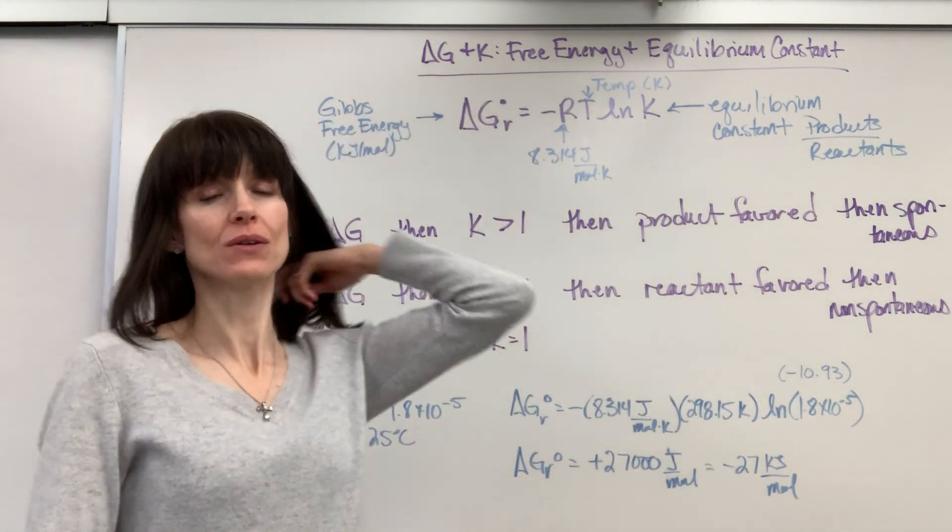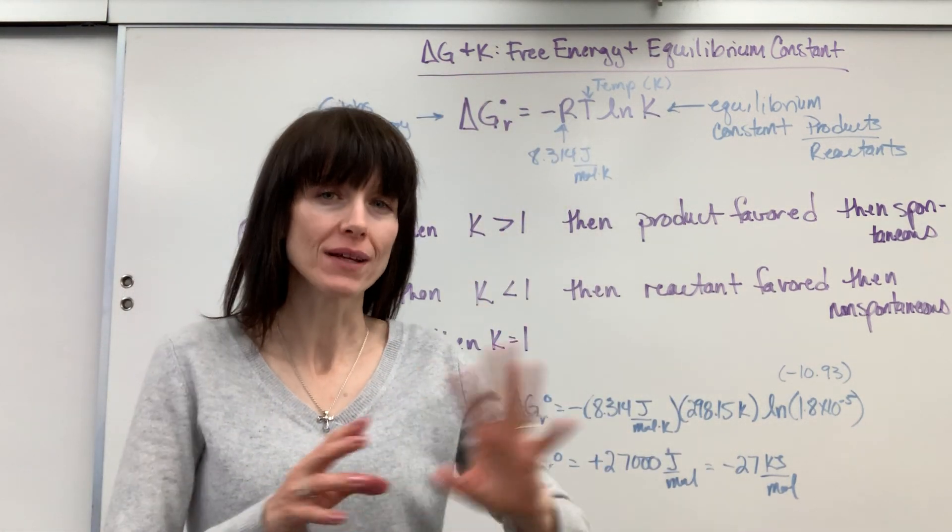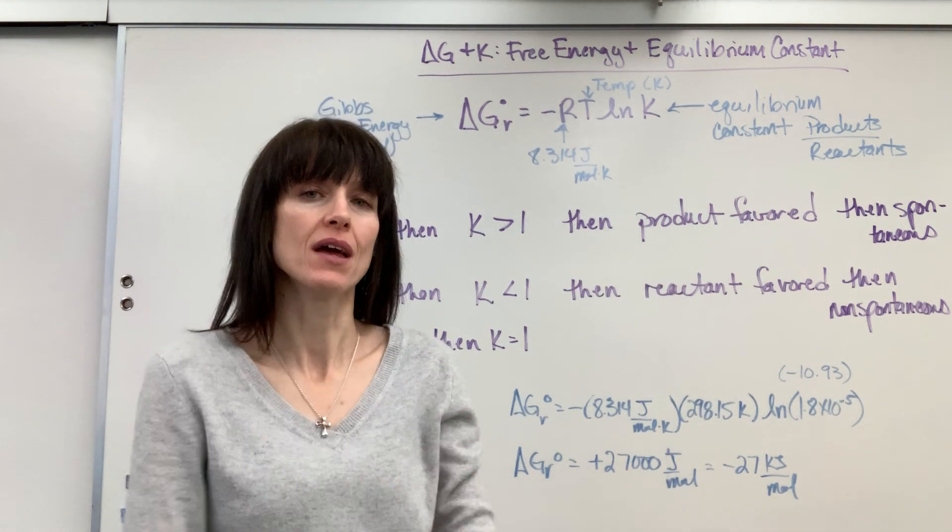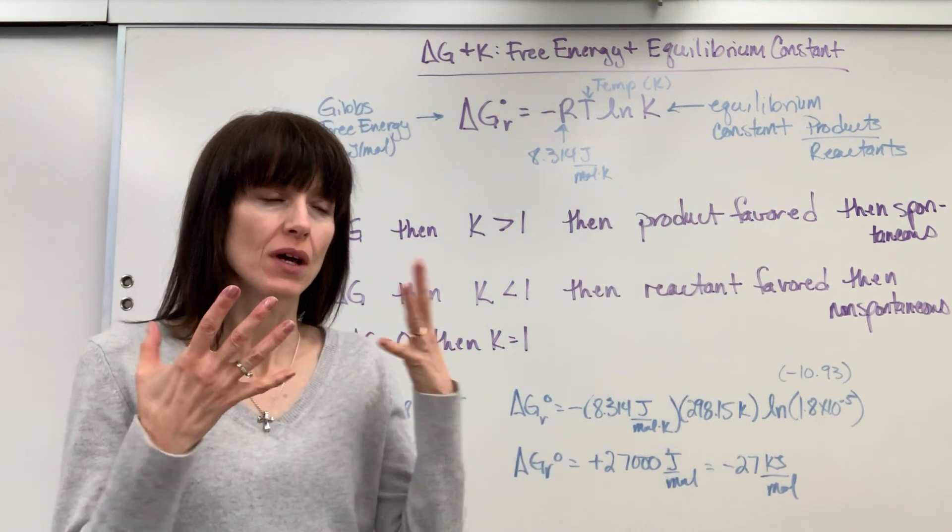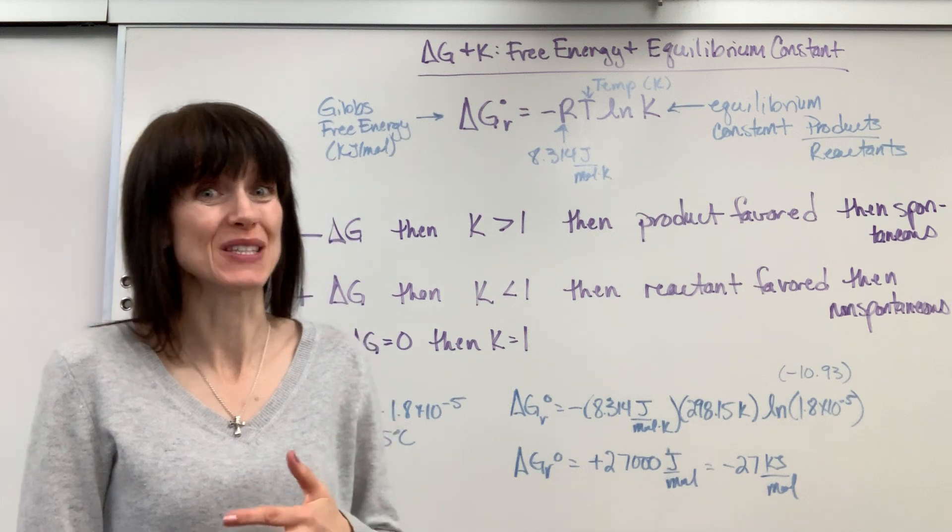So it's delta G and K. We can do a lot of really easy qualitative observations just by knowing the signs or the approximate value of delta G and K. It's pretty cool.